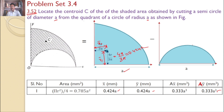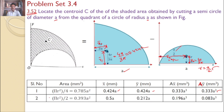Now considering the second area — the semicircle whose diameter is A. The centroid Y2 bar, from fundamentals, gives the value 4R by 3π, where R equals A by 2. For X2 bar, from symmetry, X2 bar equals A by 2. So X2 bar is A by 2 and Y2 bar is 4R by 3π with R equal to A by 2.